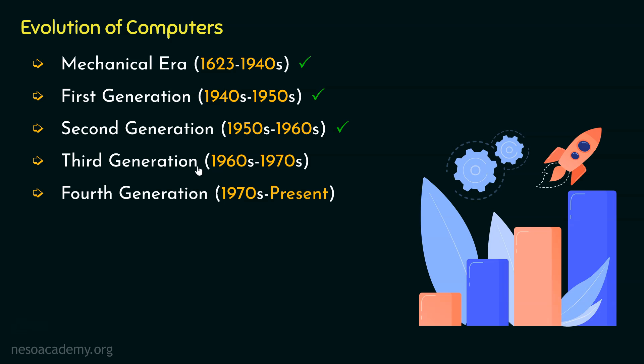In the third generation of computers, which spanned from the late 1950s or early 1960s till the early 1970s, it marked a significant transition from the previous reliance on vacuum tubes of first generation and the transistors of second generation.